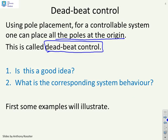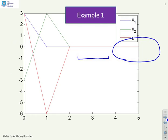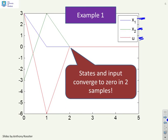First we'll give you some examples to demonstrate what this might look like. Here's an example with two states and we've got an A and a B and this is the k that you require to put all the closed loop poles on the origin. You can see first state in blue, second state in green, input in u. The states and the input converge to zero in two samples. In two samples it goes to zero.